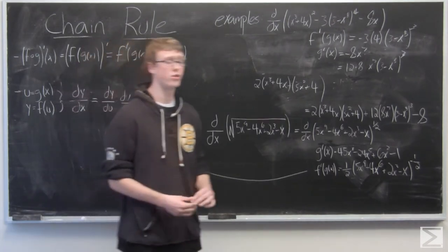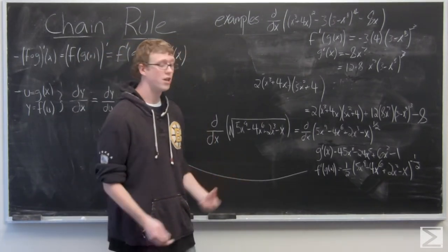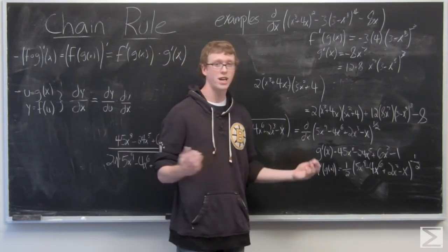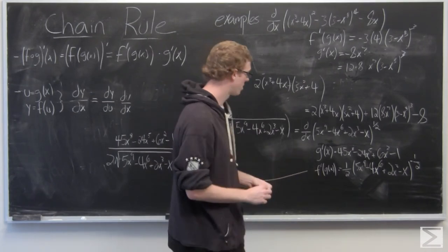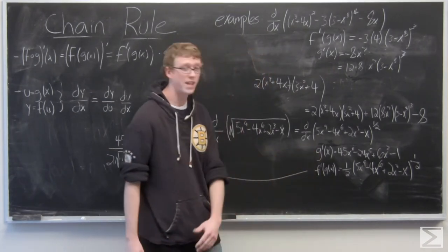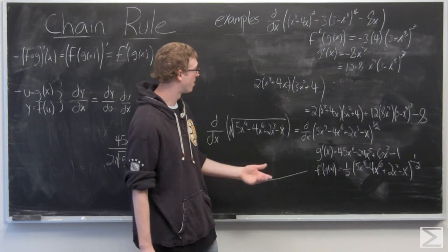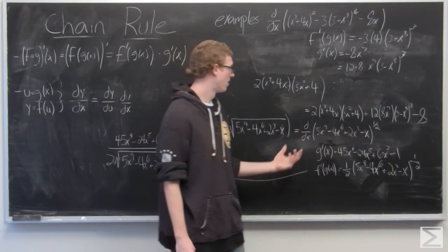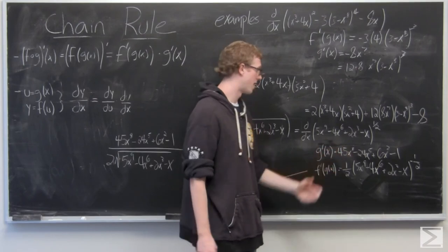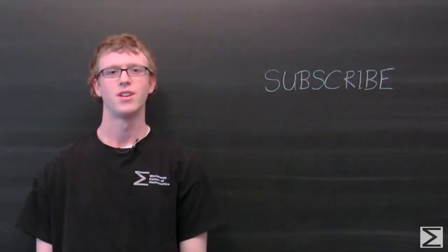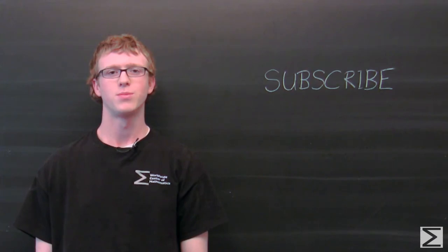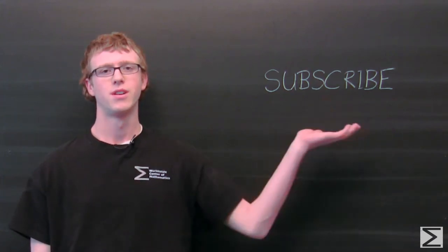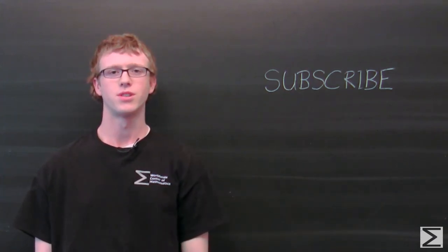And that's how you use the chain rule. Make sure that you're treating the outside and inside functions as separate functions, finding the derivative of the inside function and multiplying it by f prime of g of x. Thank you for watching. For more math videos, please subscribe to our YouTube channel, or for additional resources including affordable digital textbooks, please visit centerofmath.org.